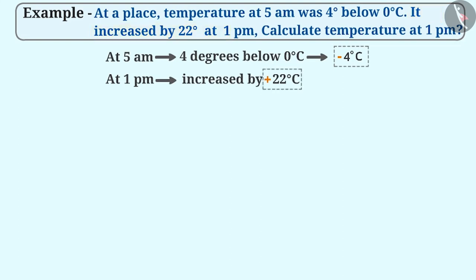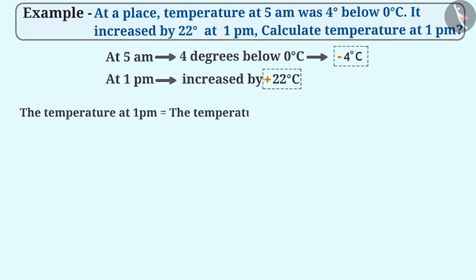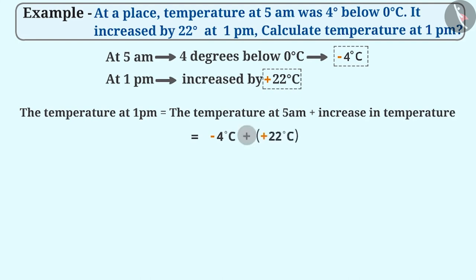As the temperature was minus 4 degrees centigrade at 5 am and the increase in temperature was plus 22 degrees centigrade, the temperature at 1 pm is calculated by adding minus 4 degrees centigrade with the increase in temperature, that is, plus 22 degrees centigrade. Here, as you can see, there are opposite signs in the expression. Can you tell how to add them?